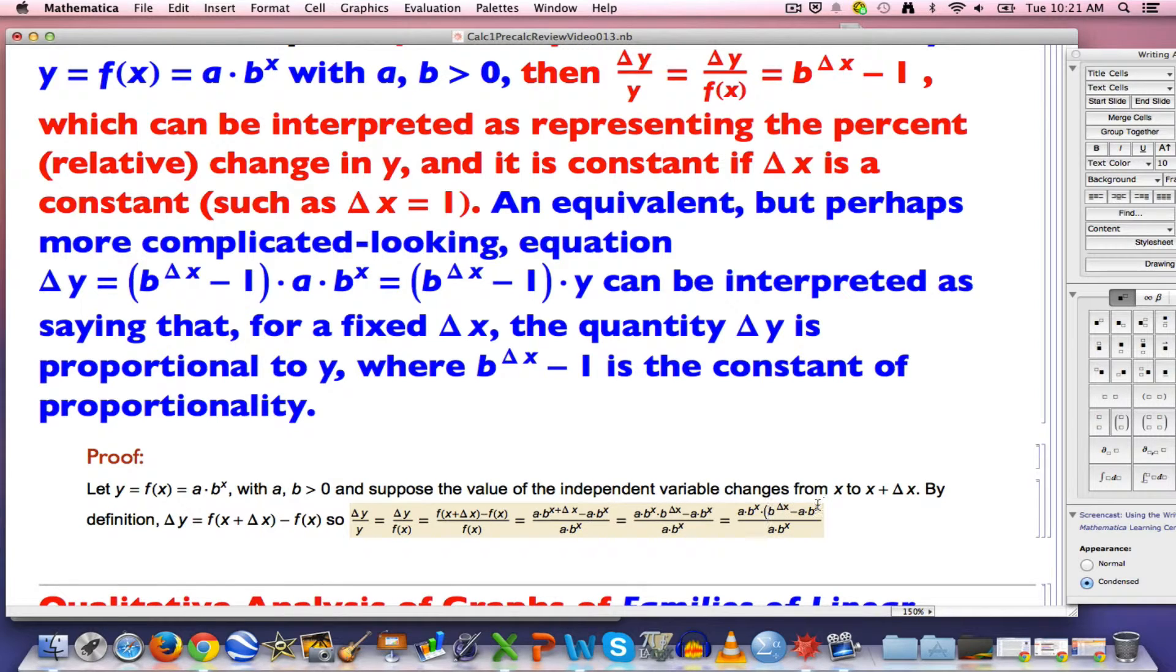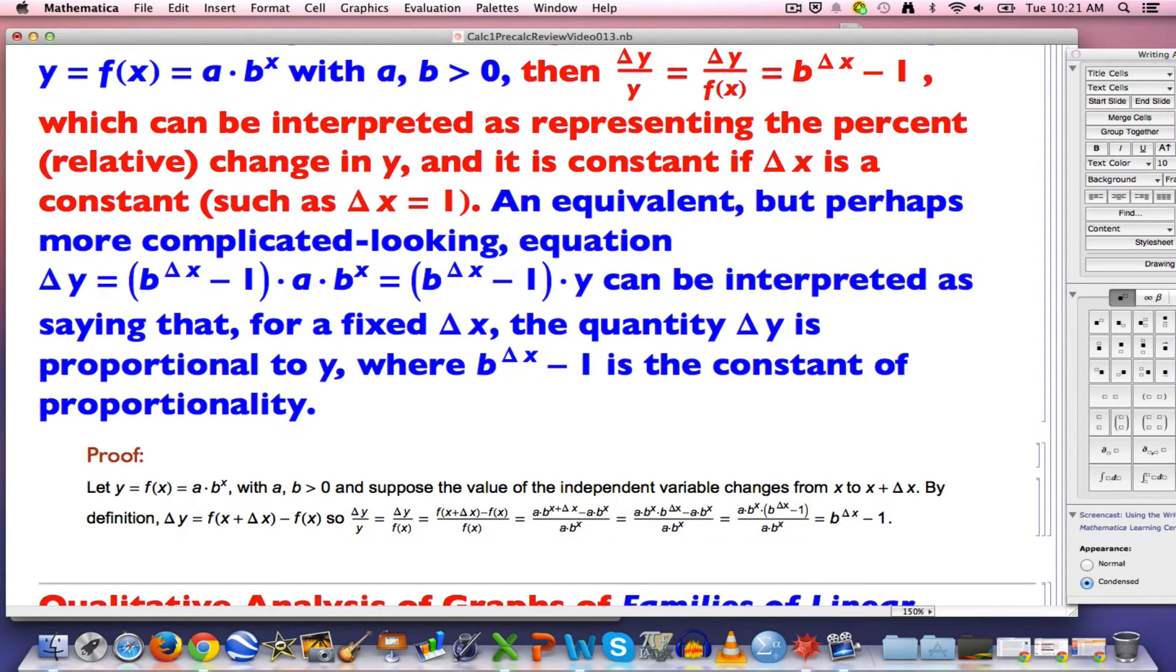Factor that out of the numerator. What happens when you factor it out? You get this. Once you've gotten that, you see that the A times B to the X's can divide out, leaving you with just B to the delta X power minus 1. And that's what we wanted to prove. QED.